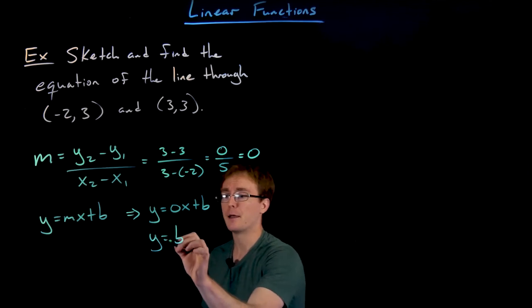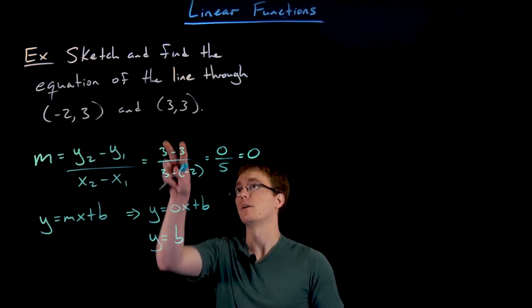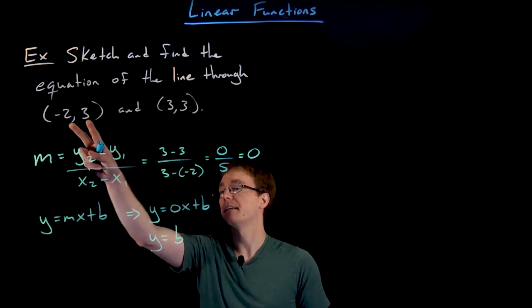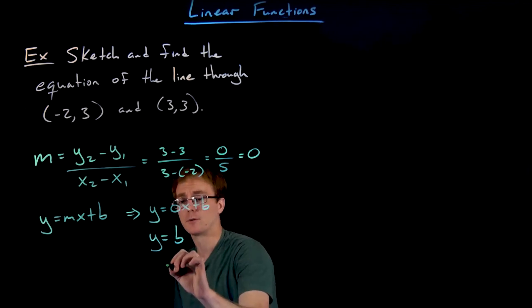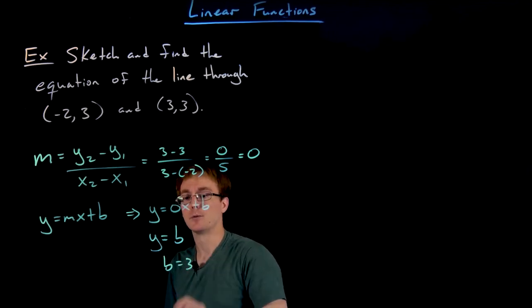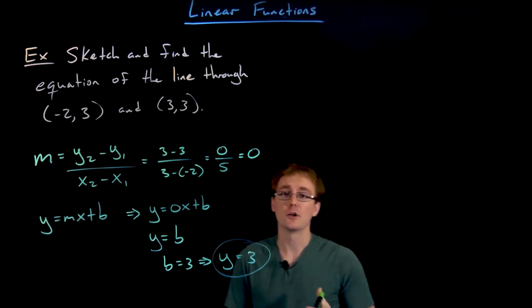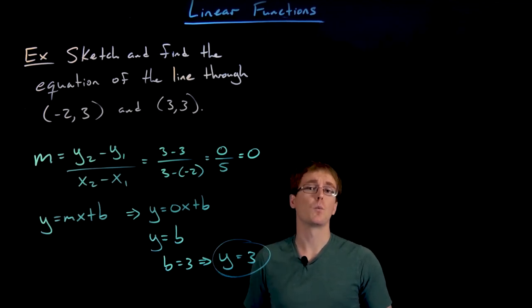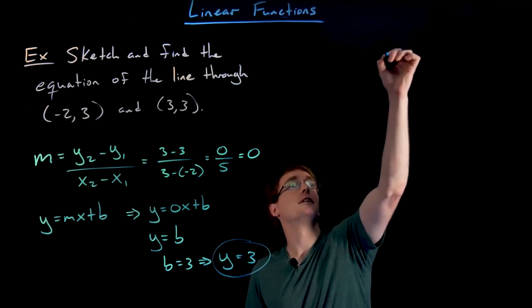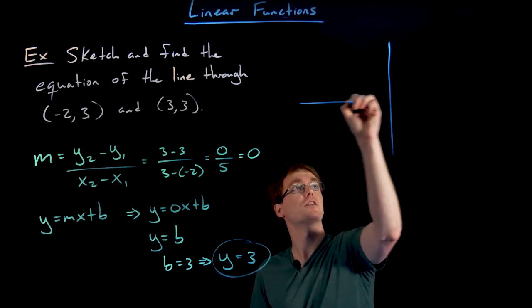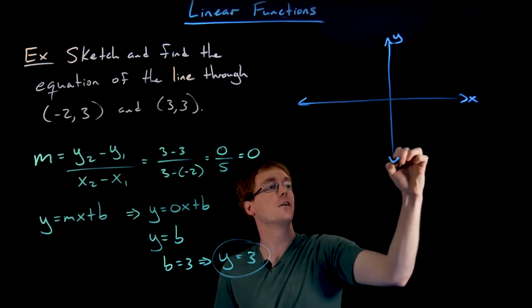Now to find that b value, we have to use a point that our line goes through. While it doesn't matter which one we plug in here, if we plug in our y values of 3, we just get our b value right away. b is equal to 3. So therefore the equation of our line going through these two points is y equals 3. And we found this equation totally algebraically without referencing a graph or a picture.